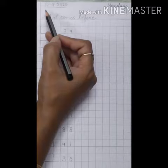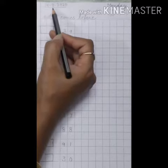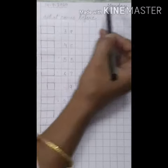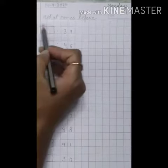Write date on the top. Today's date is 14th September 2020. Day is Monday. Leave a line here.